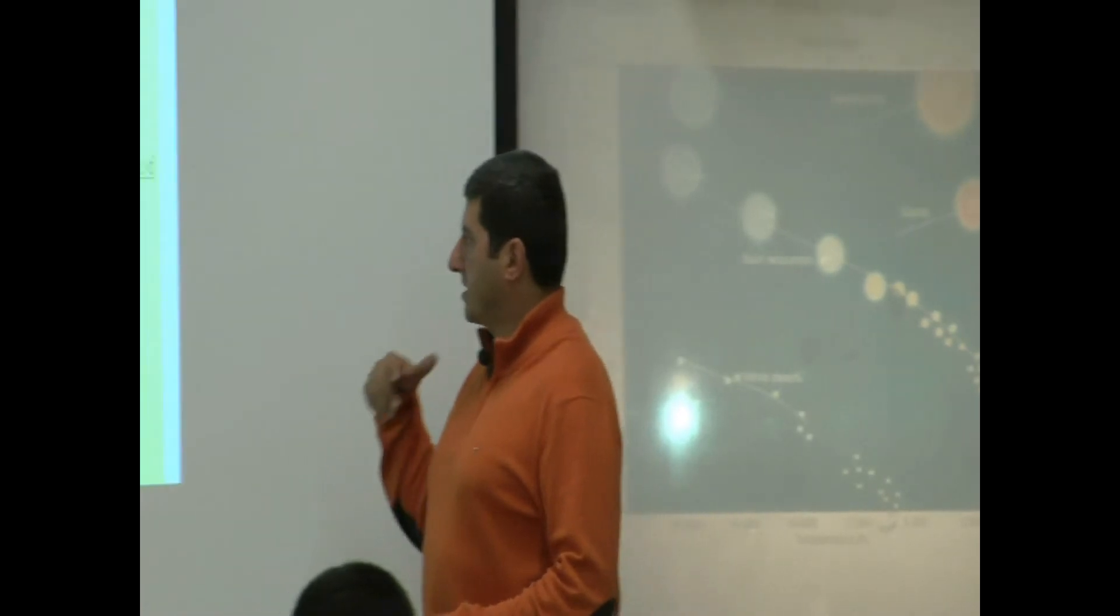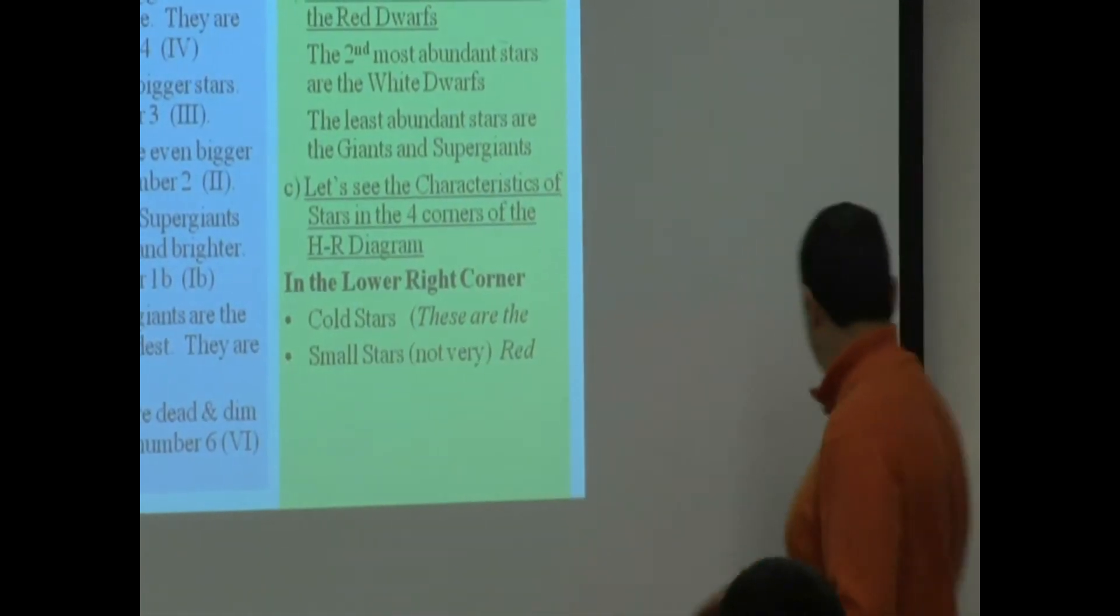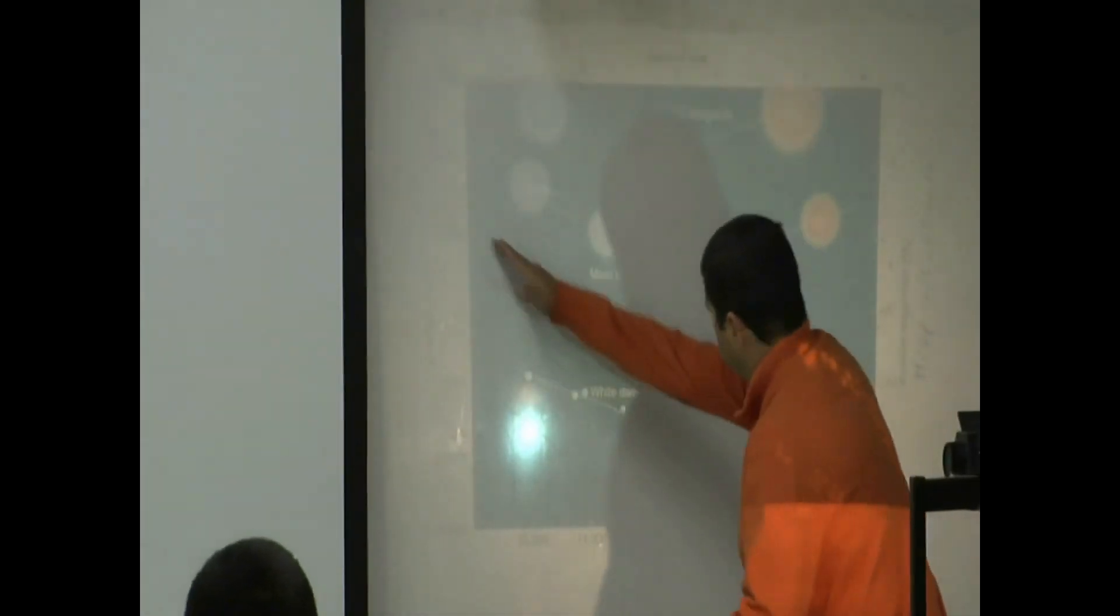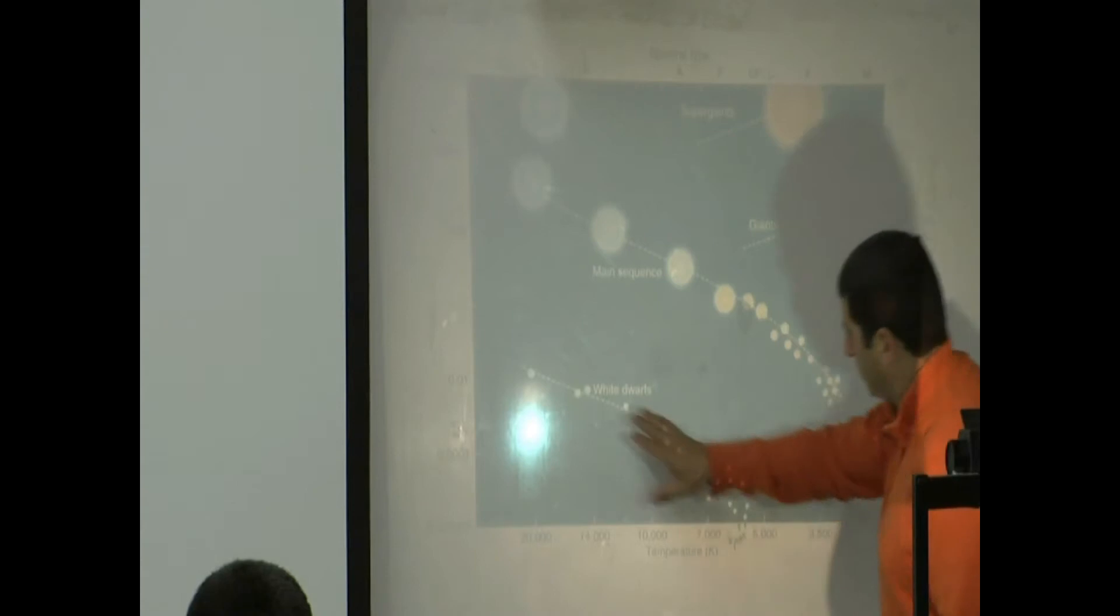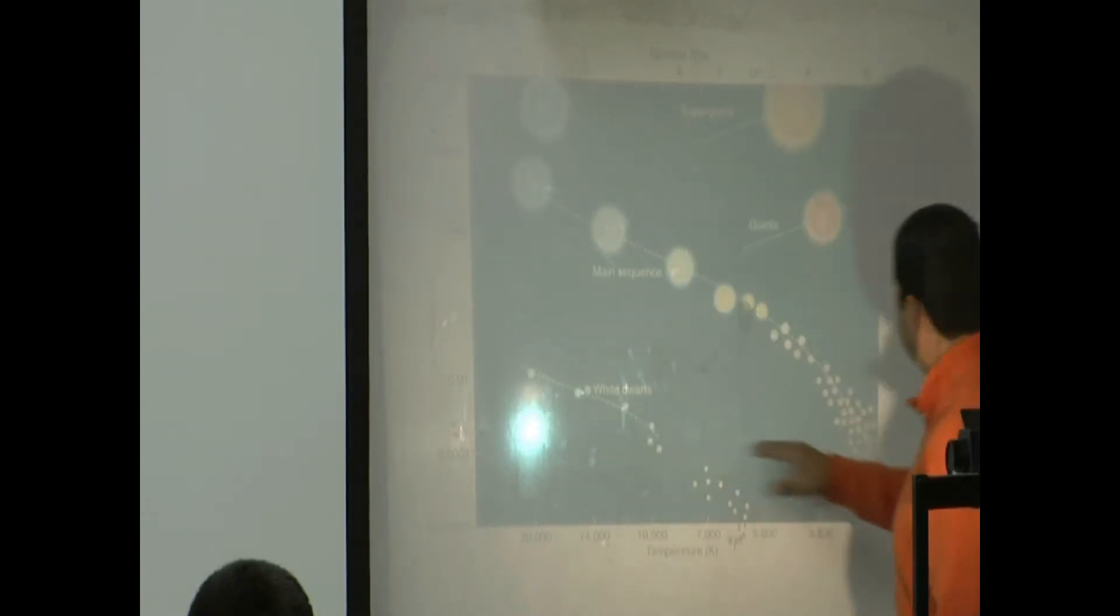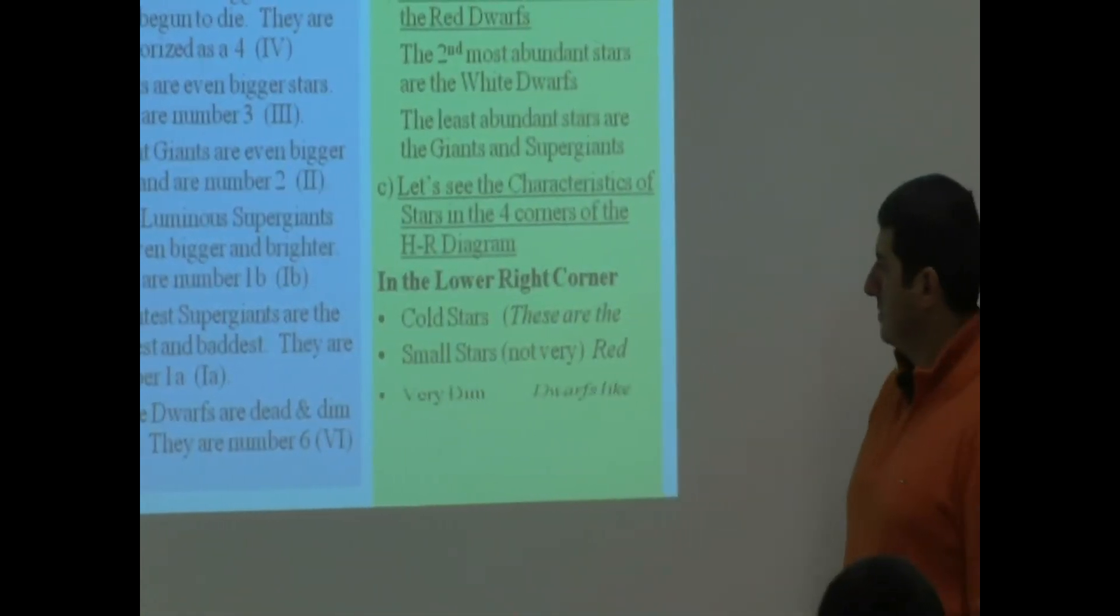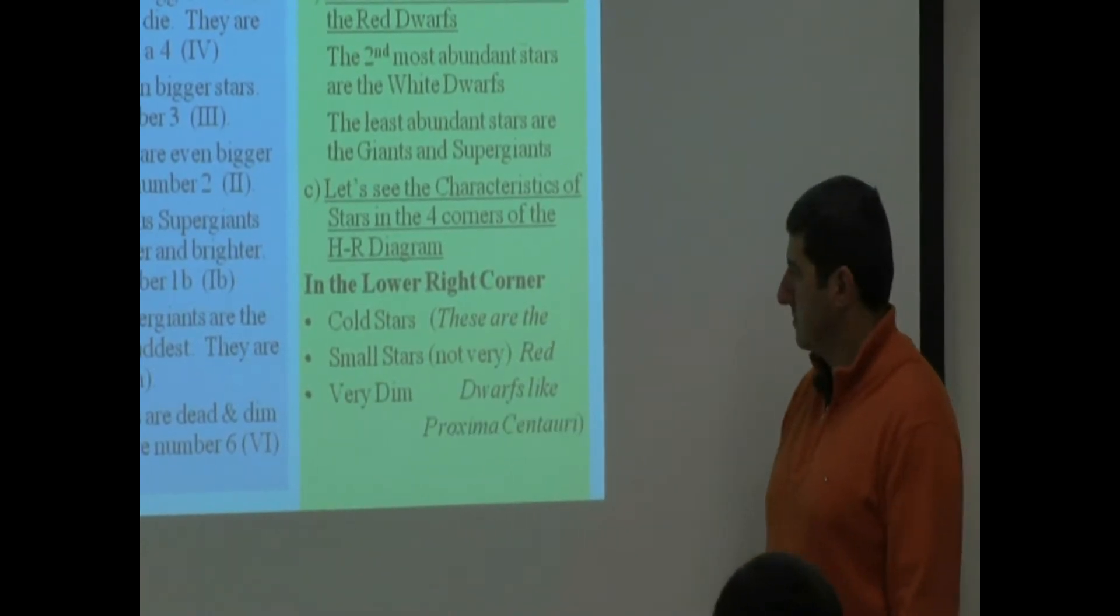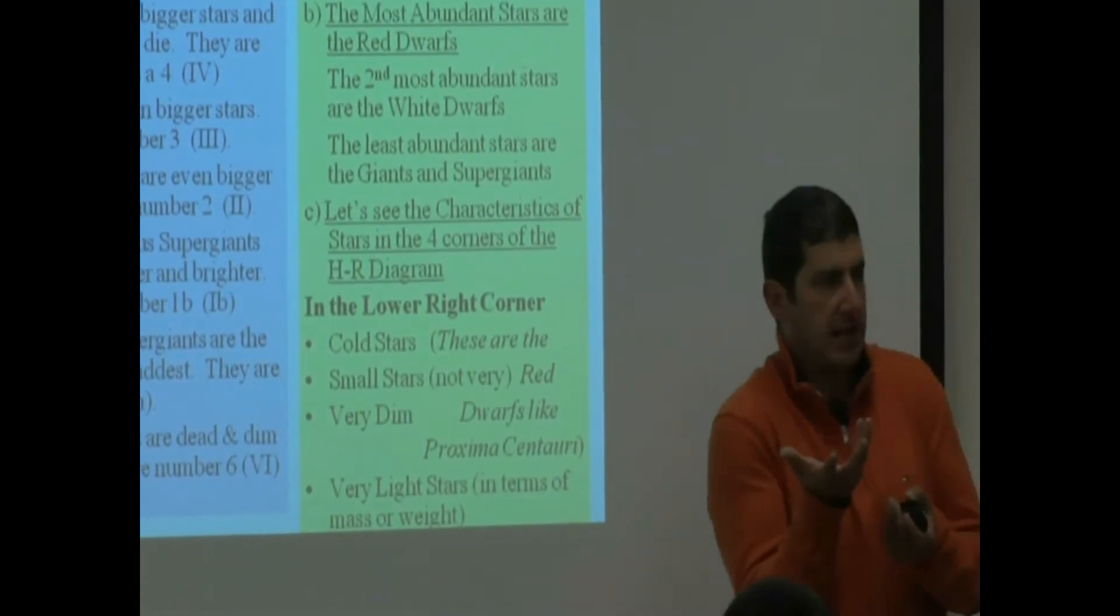So they're cold, they are small but they're not the smallest. Remember the sizes went like this, so they're not the smallest. The smallest ones would be these guys. We would expect these guys to be small but they're not the smallest stars. So they're cold, small, very dim, and very light stars. That means they don't weigh a lot, not a lot of mass.